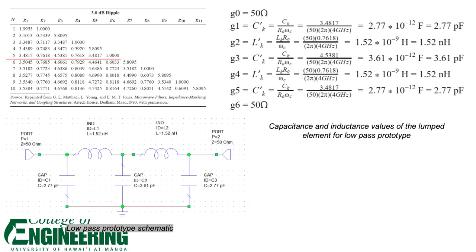Using table 8.4 from Pozar, we were able to find the g values where n is equal to 5. With the following g values and by scaling the frequency to 4 gigahertz and impedance by 50 ohms, we calculated the capacitance and inductance value of the lumped elements for the low-pass prototype.